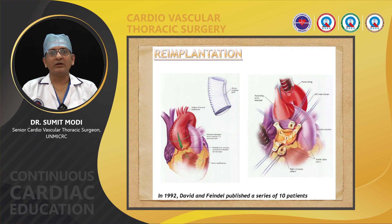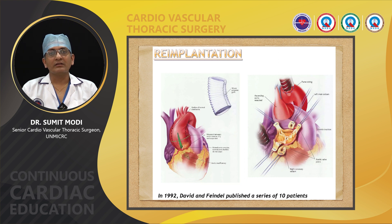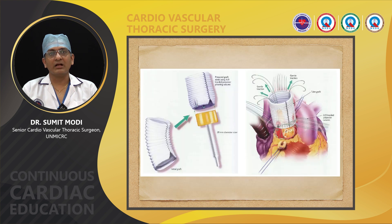We have to dissect the aortic root as low as possible below the aortic annulus. Then the sinus wall has to be excised — first from the non-coronary sinus — leaving behind a 5 mm cuff of the aortic wall adjacent to the aortic annulus. Left and right coronary buttons have to be harvested, with around 3 to 4 mm of aortic wall around the coronary buttons. The next step is to decide about the size of the graft — usually a Hegar dilator is passed through the aortic annulus and we take a 4 to 5 mm larger graft than the Hegar dilator size.